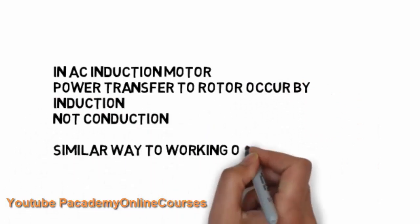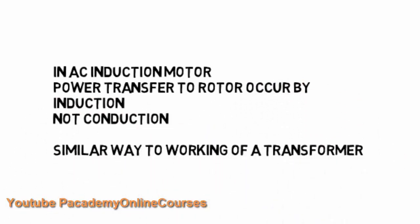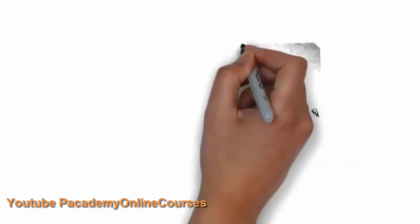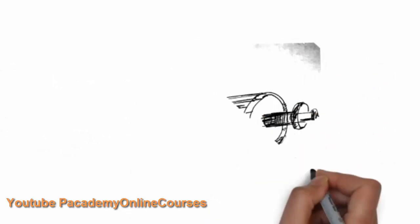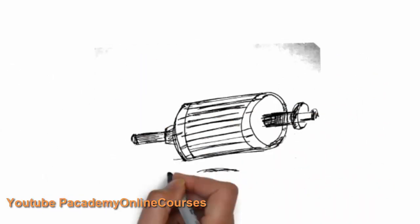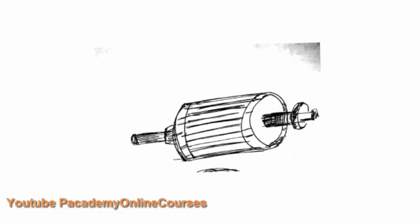In AC induction motors, power transfer to the rotor — or the transfer between the stator to rotor — is by induction, not by conduction. So the rotor of an induction motor is not fed by any external current; induction happens similar to the working of a transformer through mutual induction.